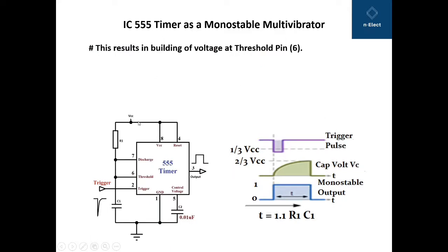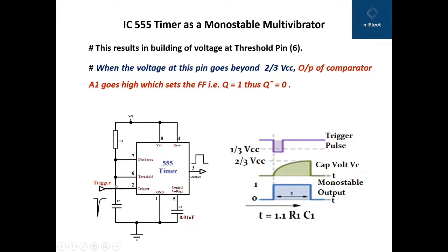The capacitor starts charging from VCC through R1, and as the capacitor starts charging, the voltage at pin number 6 goes on increasing. When the voltage at this pin goes beyond 2/3 VCC, the output of comparator A1 — that is the upper comparator, also called threshold comparator — goes high, which sets the flip-flop, that is Q equal to 1, thus Q-bar equal to 0. So as the capacitor charges toward 2/3 VCC, the output goes to 0, which was initially 1.